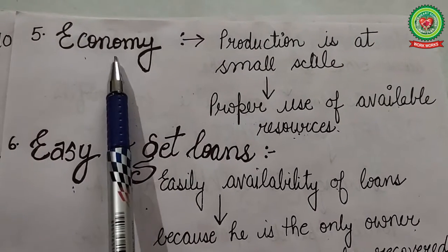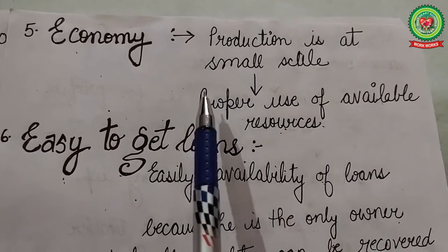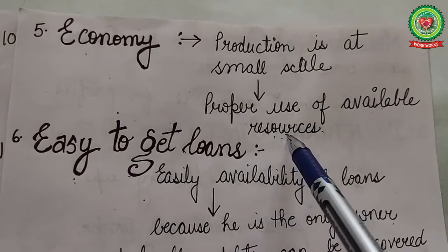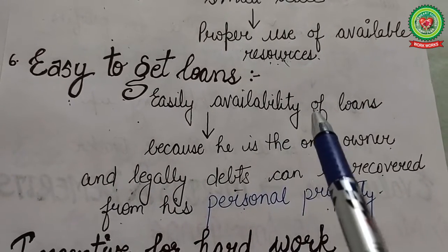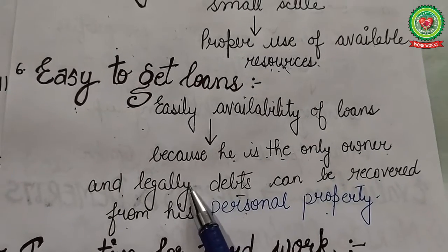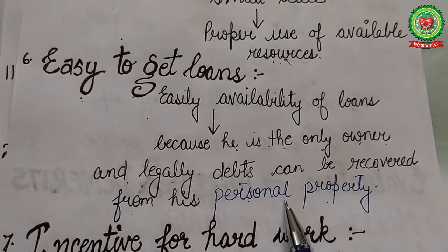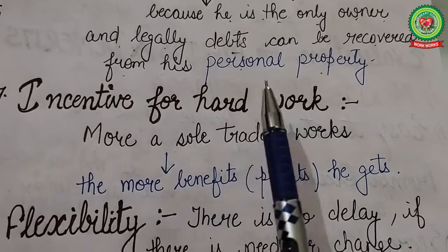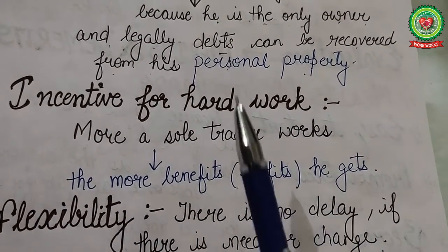Next is economy — in a sole tradership business, production is done at a small scale and the trader makes proper use of available resources to reduce the cost of production. Next is easy to get loans — the sole trader can easily get loans for the expansion of business because he is the only owner, and legally debts can be recovered from his personal property. Next is incentive for hard work — the more the sole trader works, the more benefits he gets, so he works hard to maximize his profits.